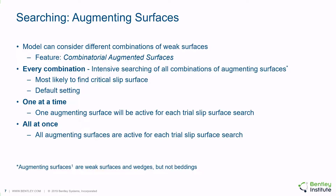Having one or more weak surfaces in a model creates additional complexity related to searching for a critical slip surface. This is because every time a trial slip surface crosses a weak surface, it's possible that a more critical slip surface can be found by following the weak surface rather than cutting through it. By default, the software searches for every combination of one or more augmenting surfaces as well as the current trial slip surface. This method is most likely to find the critical slip surface, but it takes longer than other methods.